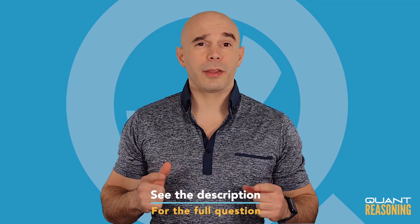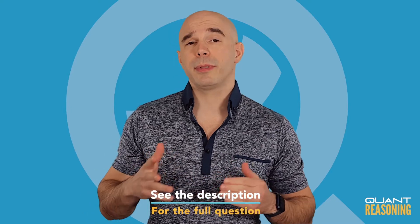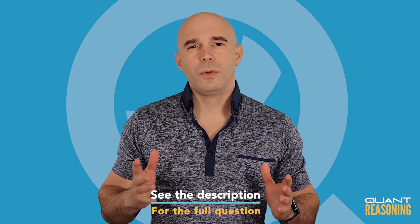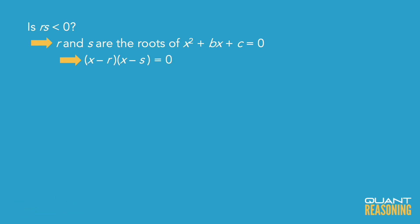So r and s are the roots of the equation x squared plus bx plus c equals 0. What does that mean? It means that x minus r times x minus s equals 0, because if you plug in x equals r, the equation works, and if you plug in x equals s, the equation works. So the fact that r and s are the roots means that plugging in either value satisfies the equation.